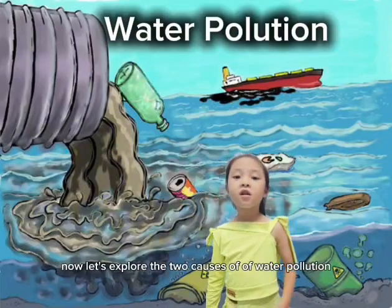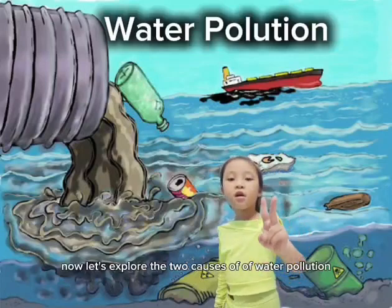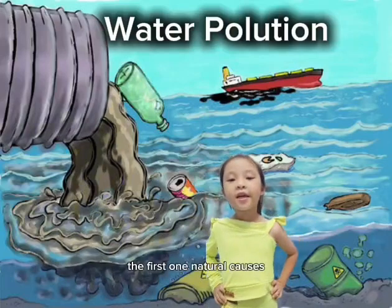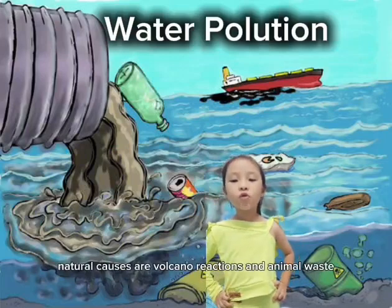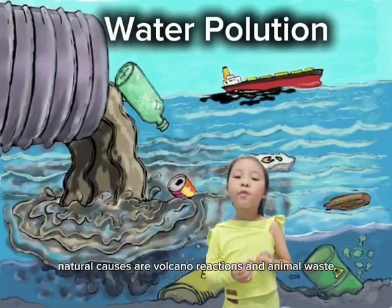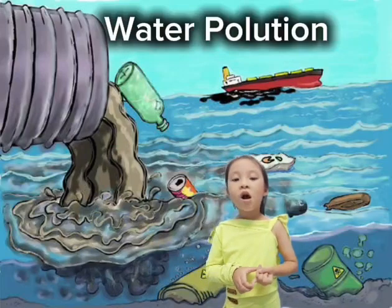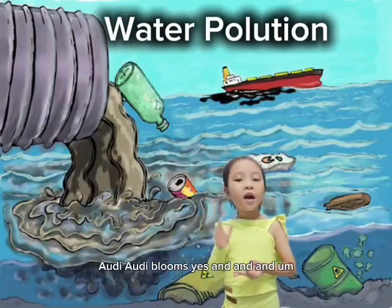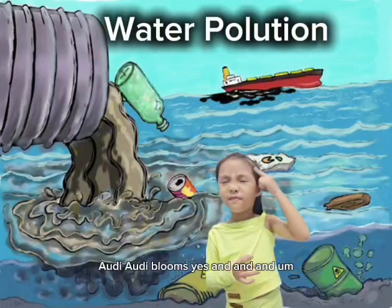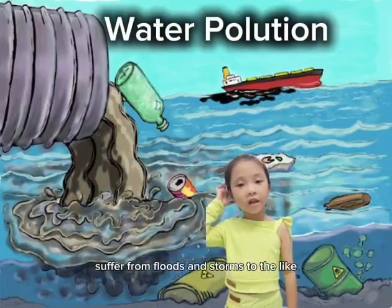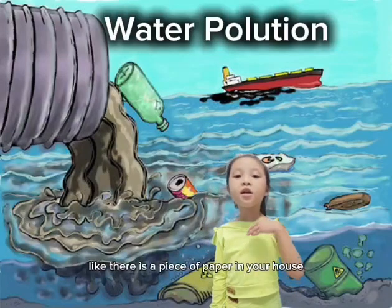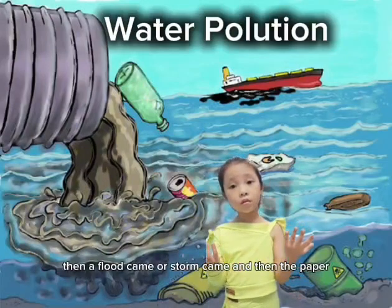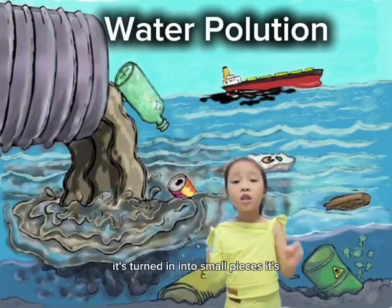Let's explore the two causes of water pollution. The first one: natural causes. Natural causes are volcano eruptions, animal waste, and also algae blooms. And from floods and storms — like, if there is a piece of paper in your house, then a flood or storm came and the paper is turned into small pieces.